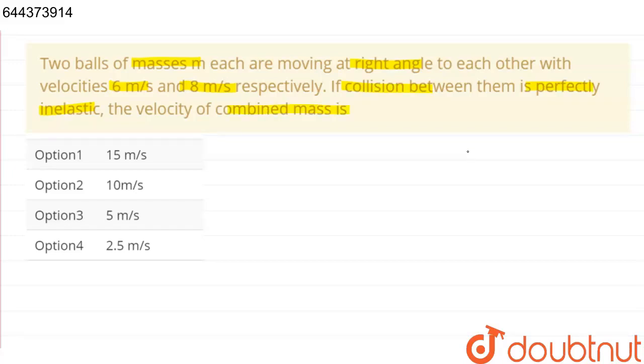Suppose ball A is moving with velocity 6 meter per second in x direction. Suppose this is x, and another ball is moving with 8 meter per second in y direction. Suppose this is y direction, and both have given mass m.